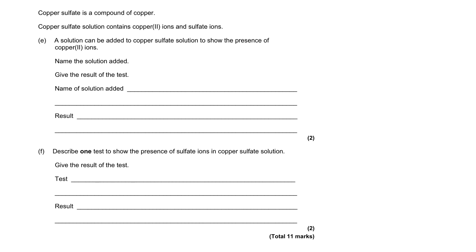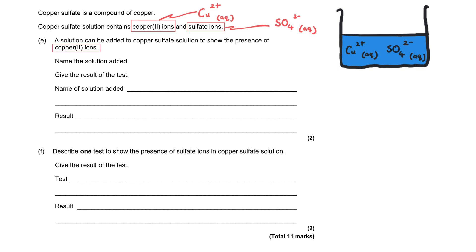Copper sulfate is a compound of copper. Copper sulfate solution contains copper(II) ions and sulfate ions. A solution is added to copper sulfate solution to show the presence of copper(II) ions. Name the solution added and give the result of the test.